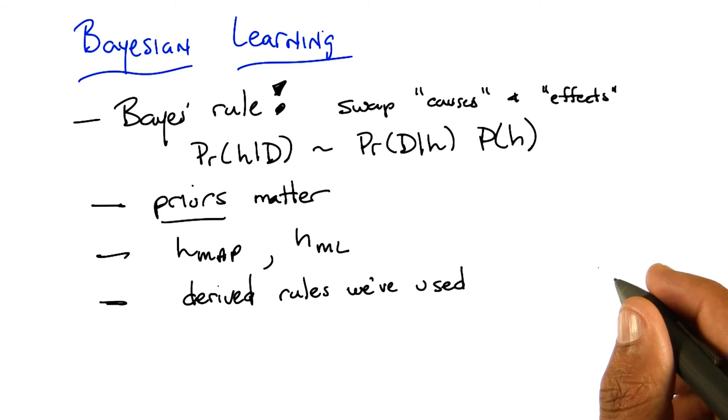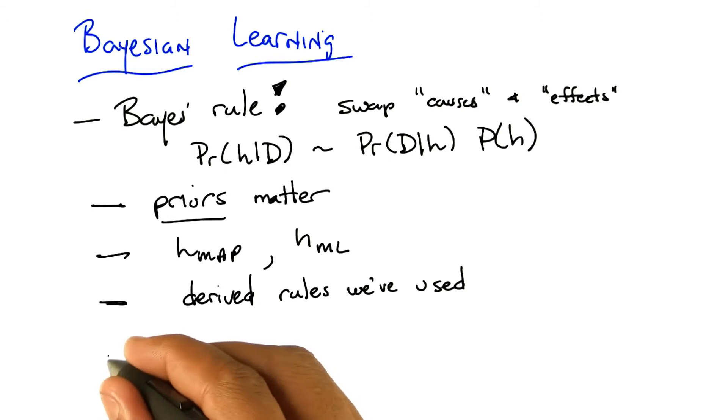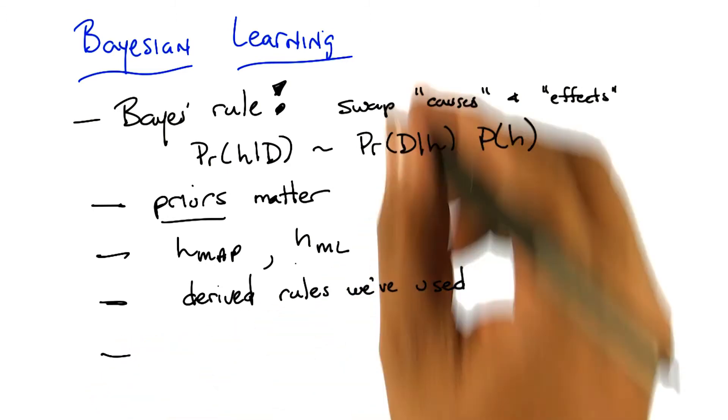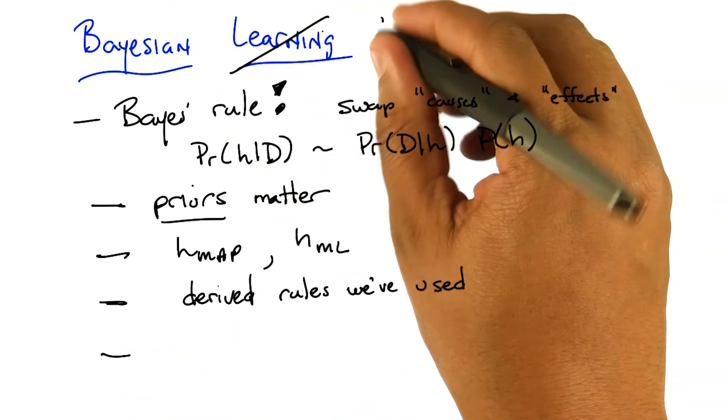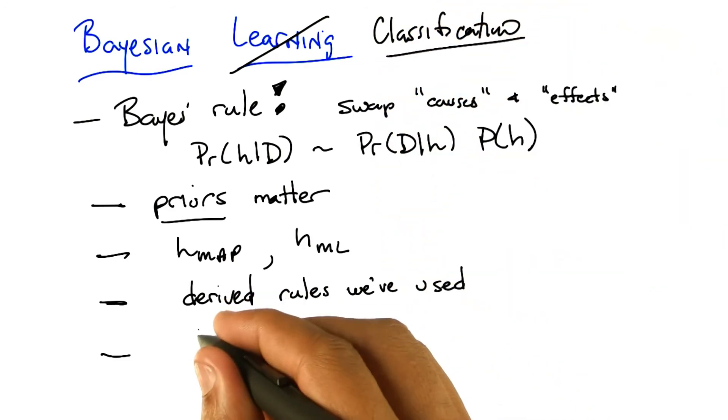And then finally, you told me that was all a lie. And you said that really what you want to do is this other kind of way of picking that actually factors in the probability of all the different hypotheses and having them essentially vote. Right. What we really care about is classification or learning in the end. And so we also learned about Bayes classifiers.